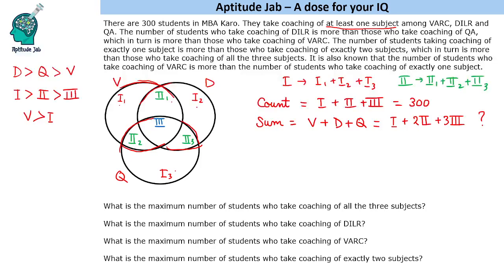Question 1: What is the maximum number of students who take coaching of all three subjects? We need to maximize the three-subject region. Since one + two + three = 300, and one > two > three, if we set them equal at 100 each that would be maximum, but they must be strictly decreasing. So we set them as 101, 100, 99. The answer is 99.